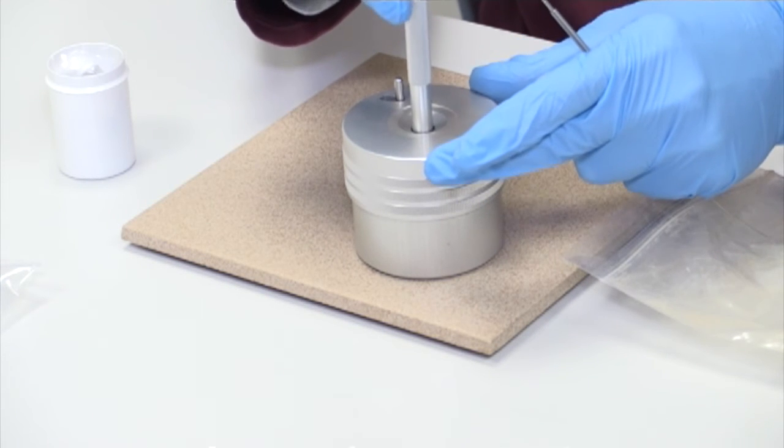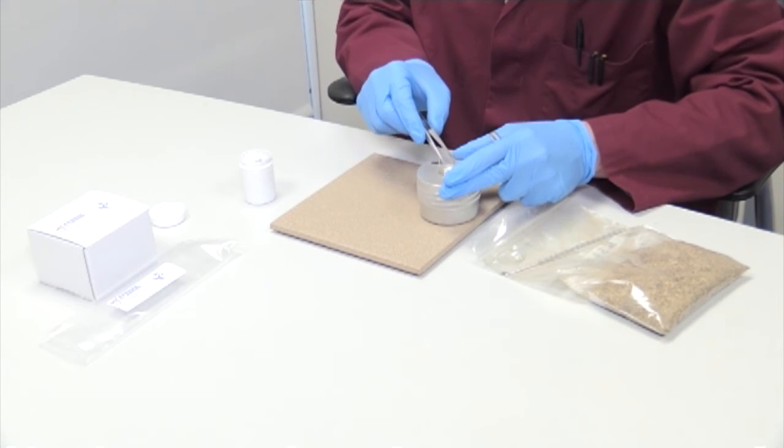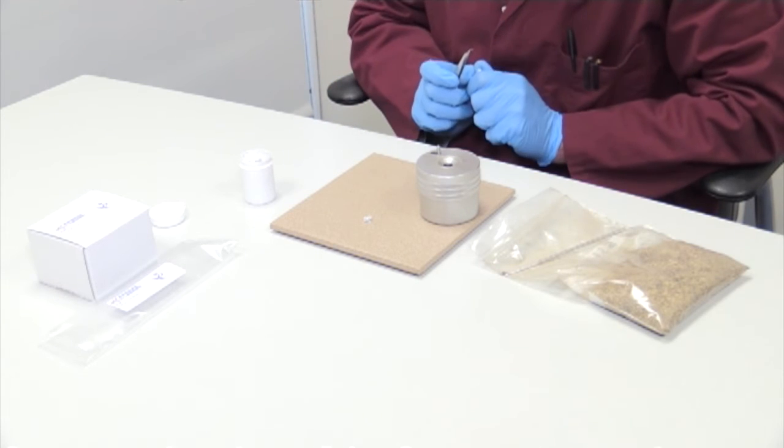The plunger tool is then used to compact the capsule into a disc, which is ejected by pushing down on the top of the device.